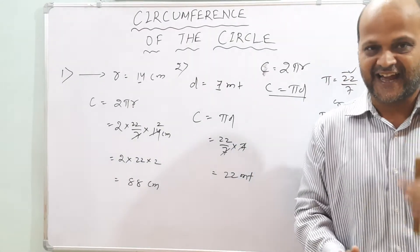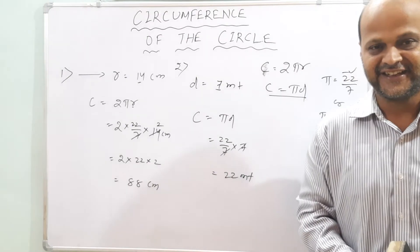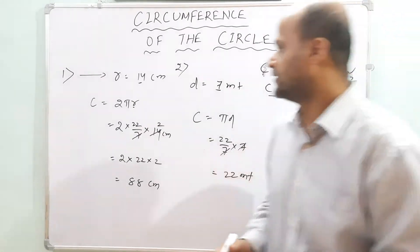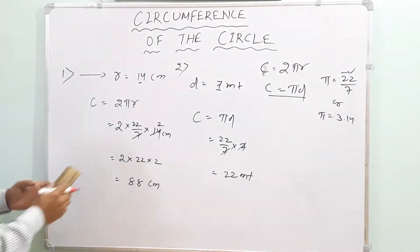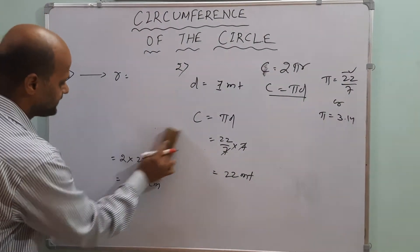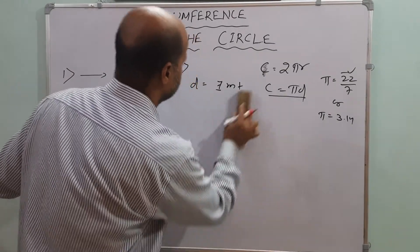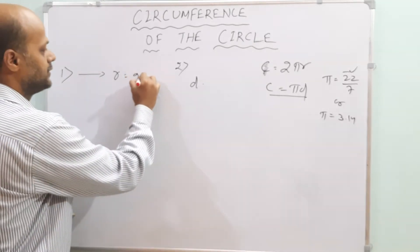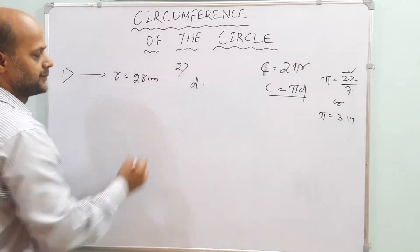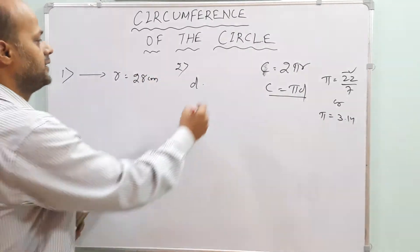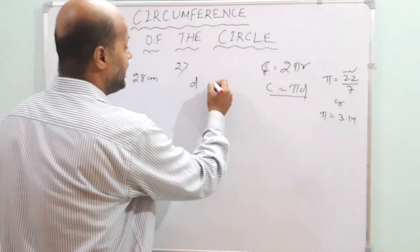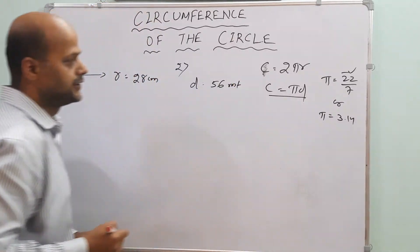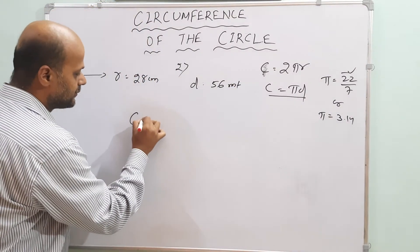Now here is a practice problem for you. If the radius is 28 centimeters and the diameter is 56 meters, what is the circumference of the circle? Apply the formula and get the answer.